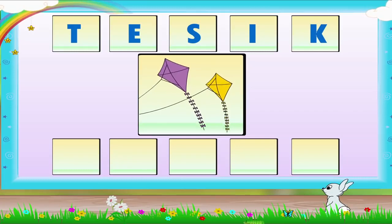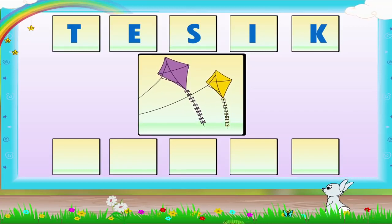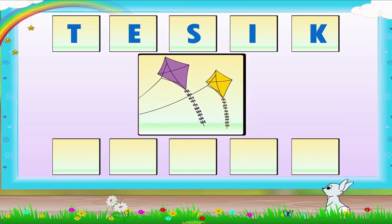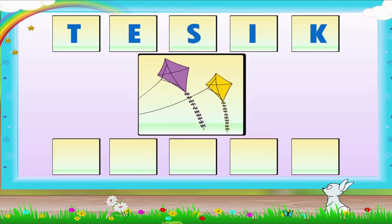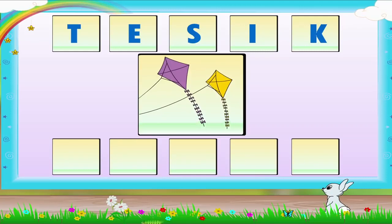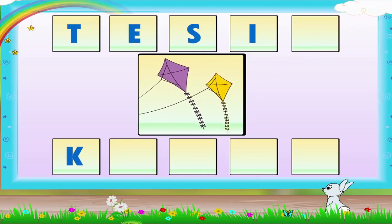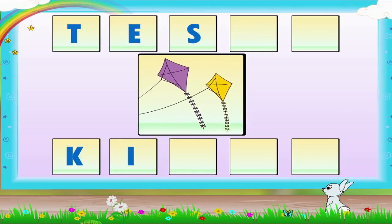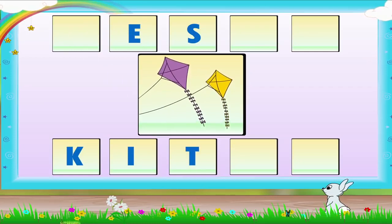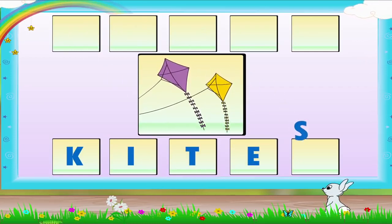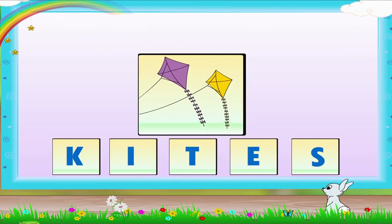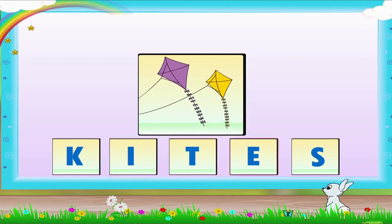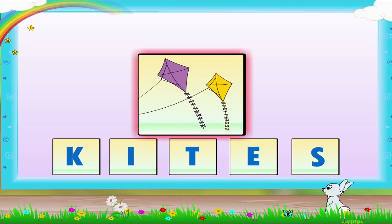Can you rearrange the letters and make the correct word? Look at the picture. This is a picture of kites. So, the first letter will be K. Next is I. Then which letters will follow? K, E, S. Yes. It is K, I, T, E, S. Kites.